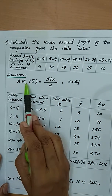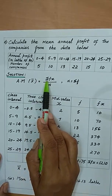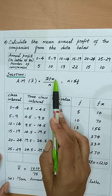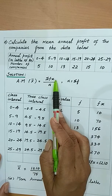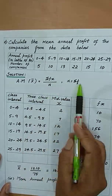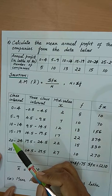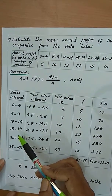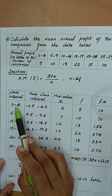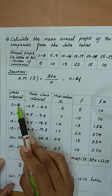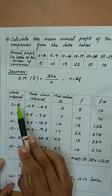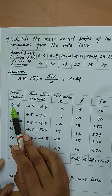The arithmetic mean formula is x̄ = Σfx / n, where n = Σf, x denotes mid values of the class intervals, and f denotes frequency. Since we are given an inclusive type class interval, we first write the given class interval and then convert to true class intervals by subtracting 0.5 from the lower limit and adding 0.5 to the upper limit.